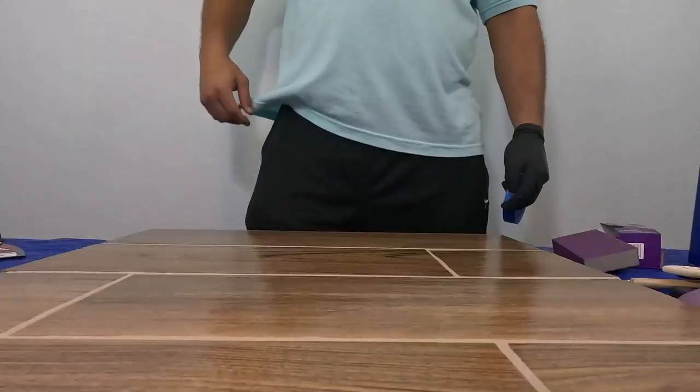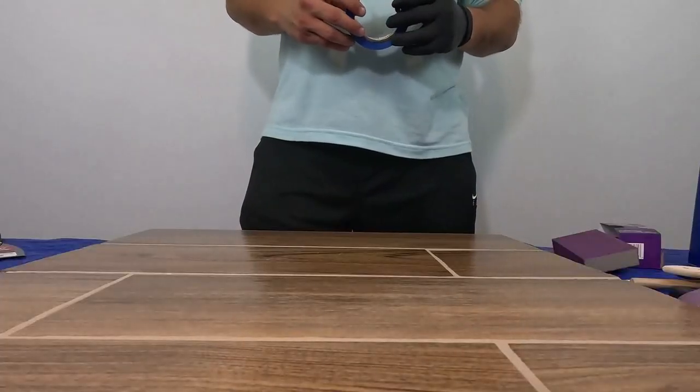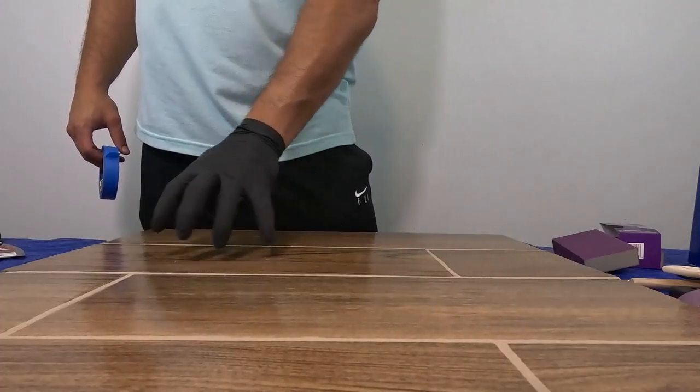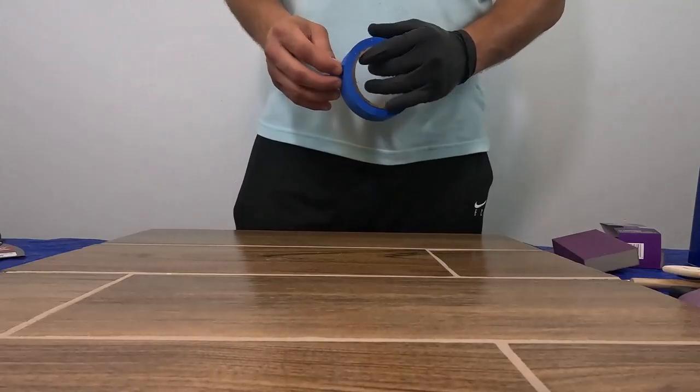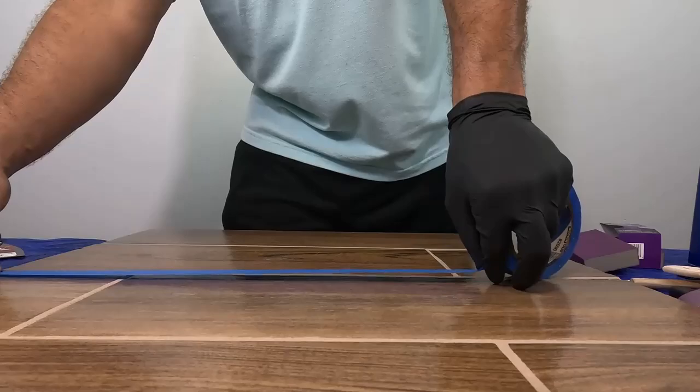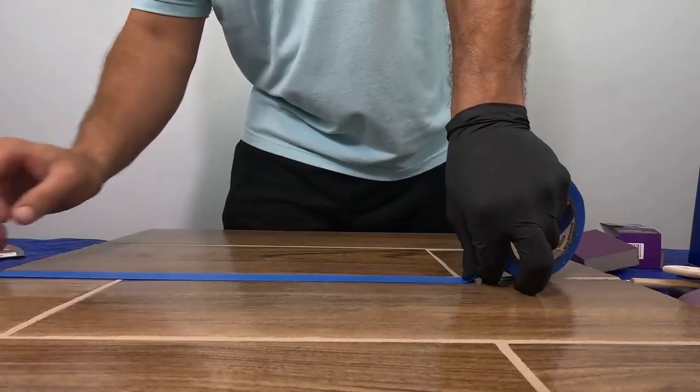We recommend that you do a whole tile if you have a scratch or missed spot, rather than just doing a spot repair. It will blend in better if you work around the grout lines and repair that entire tile.